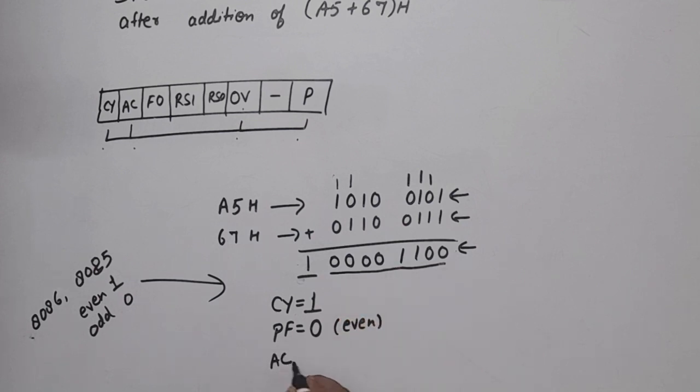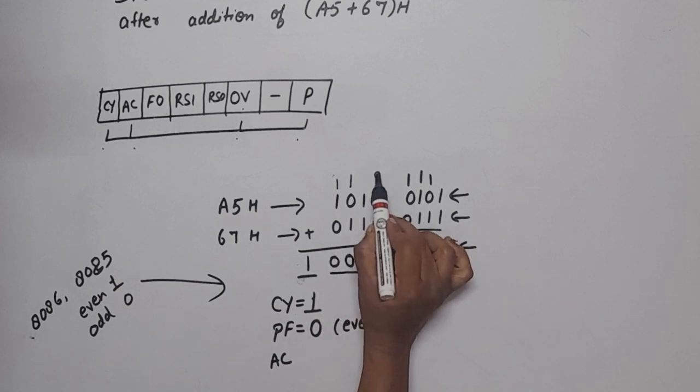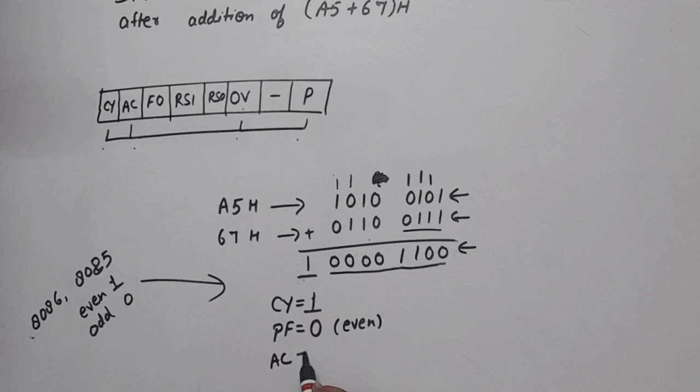Now, auxiliary carry. Auxiliary carry is for lower nibbles, if carry transfers. But you can see here, no carry from the lower nibble, so AC value is 0. That's it. Thank you so much.